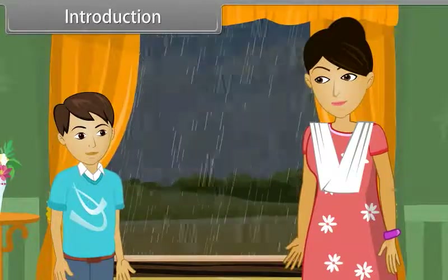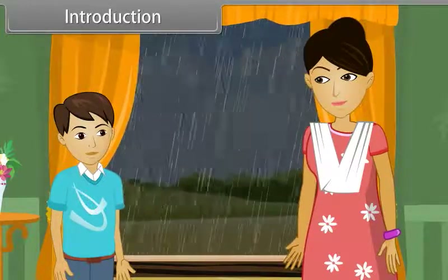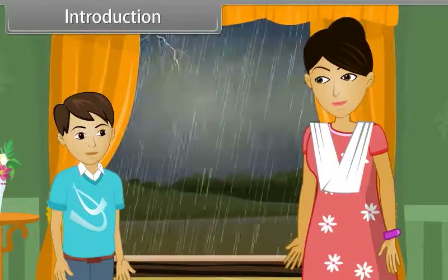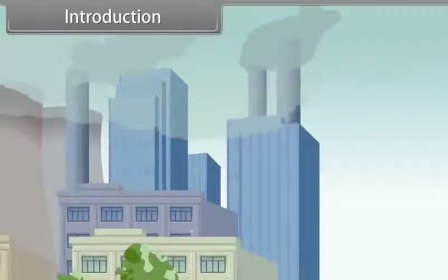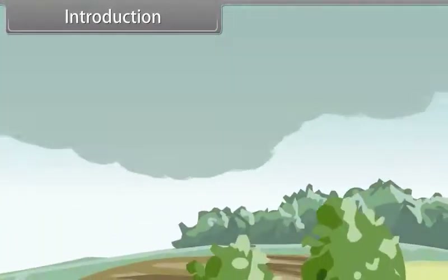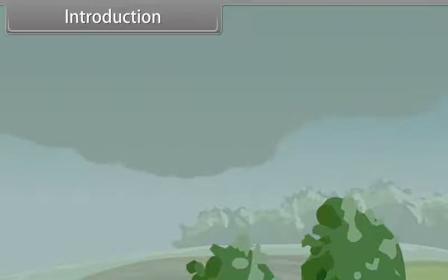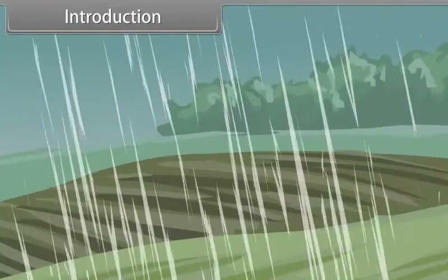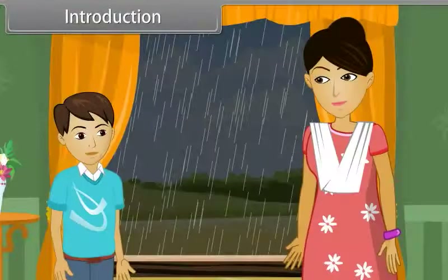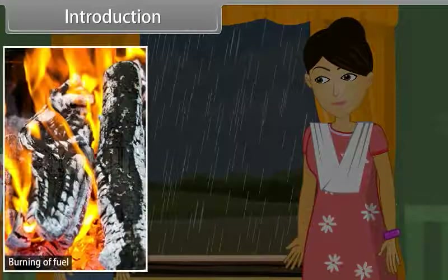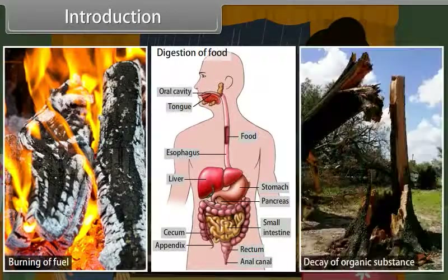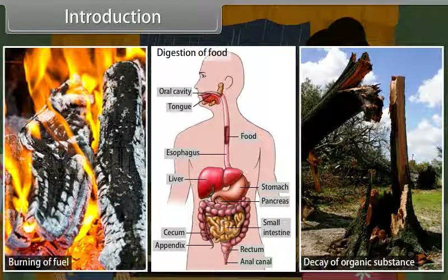Sumit didn't have any idea about that and asked, "What is acid rain?" She replied that the atmosphere has many polluted particles like carbon, sulfur, and nitrogen. These particles make redox reactions with water drops and turn them into acid rain. Students, redox reactions are all around us — burning of fuel, digestion of food, and decay of organic substances are a few examples of redox reactions. Today, we will discuss more about redox reactions.